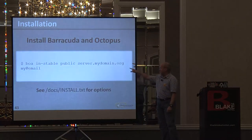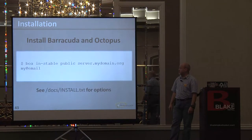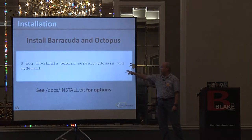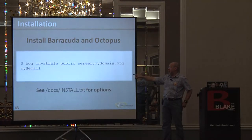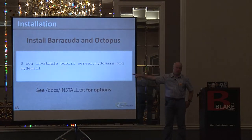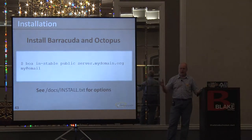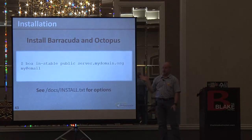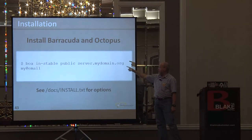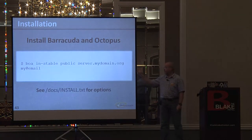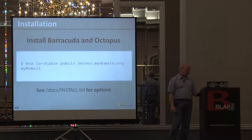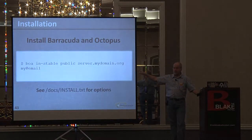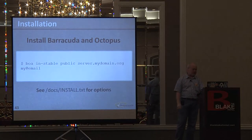With this one line to run the script, you're telling the Barracuda-Octopus-Aegir setup to run — in this case the stable version, which is essentially the same as the current release version as opposed to the HEAD. You're set up as public as opposed to localhost. You're running it on this domain and your email address. You can also add to that an additional name to set up your first instance of Octopus. All that information is in the install.txt file, so just follow directions and you'll be fine.